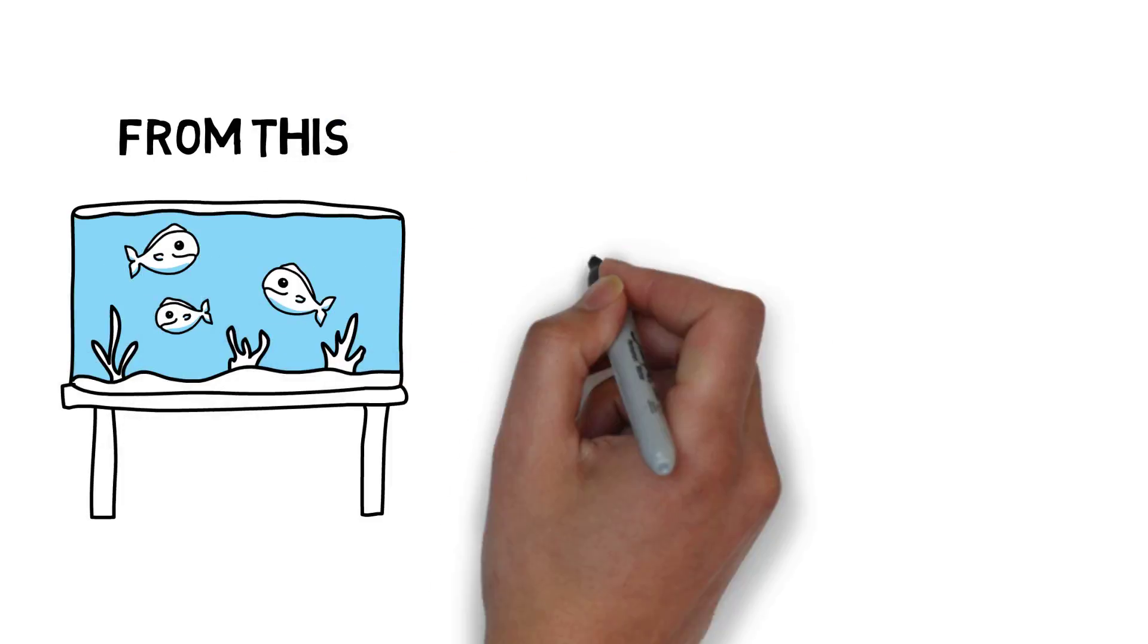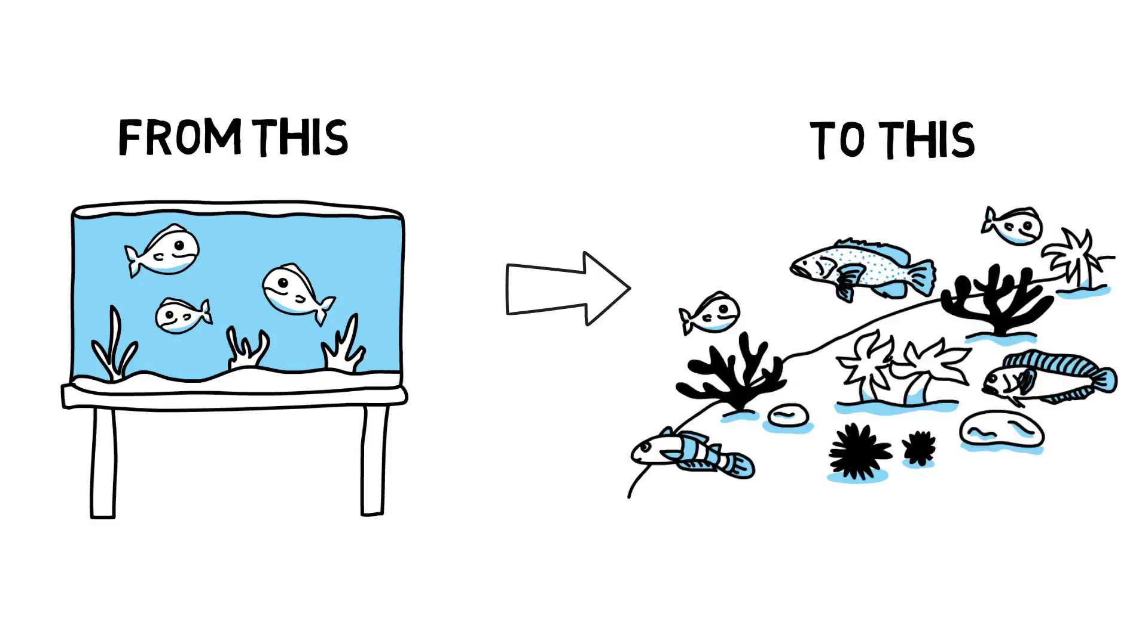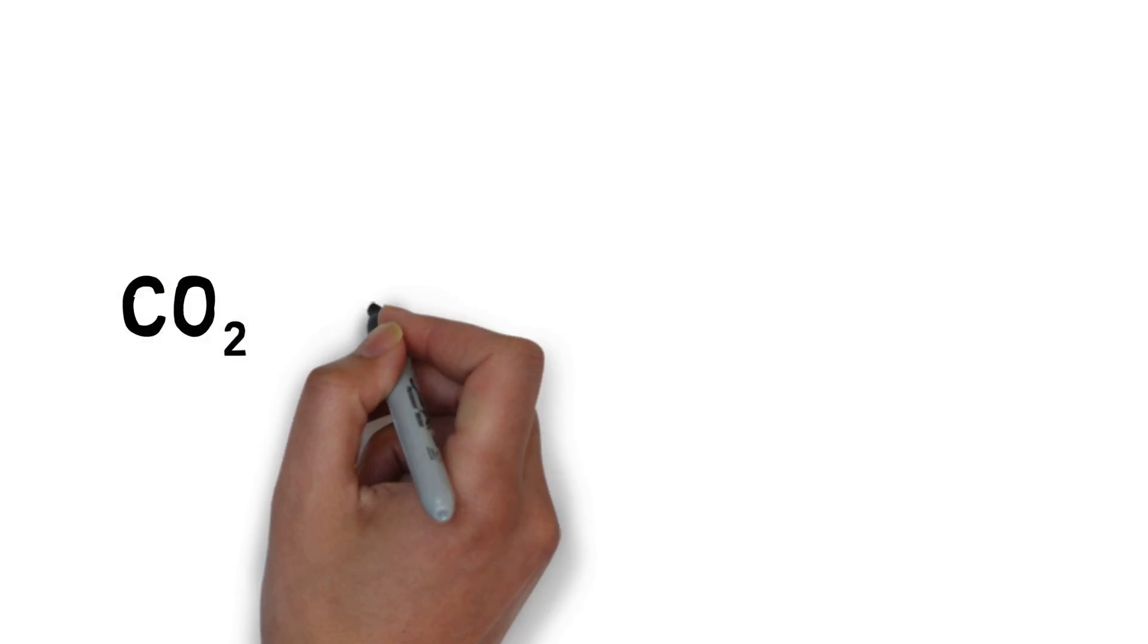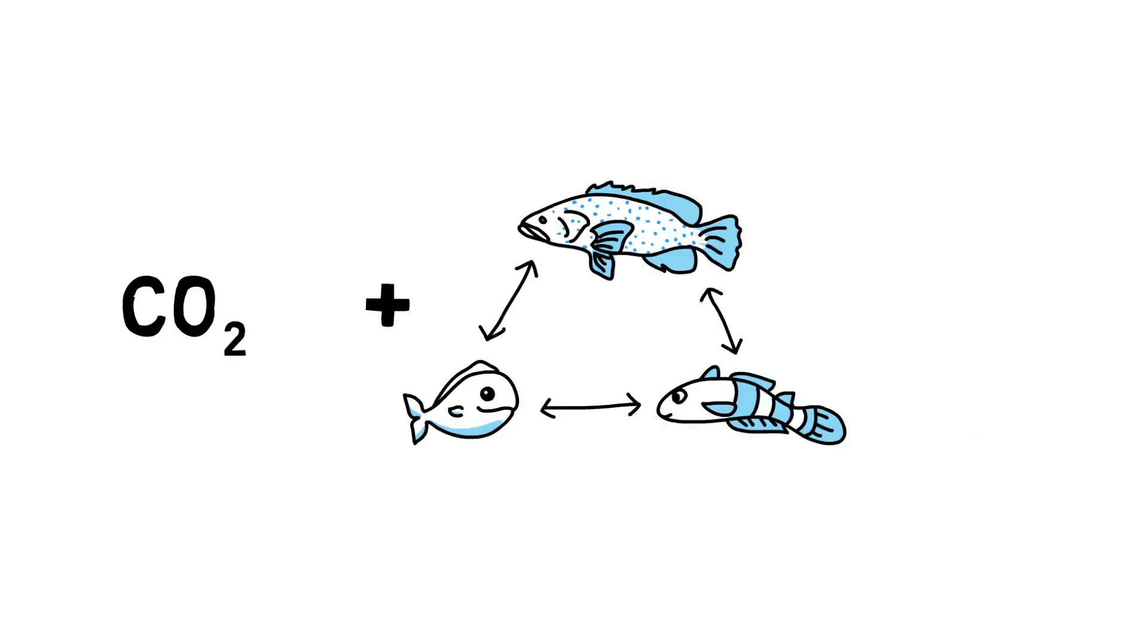It is now time to scale up our studies and try to understand how entire ecosystems and species communities will respond to climate change. This is important because the interactions between species might reveal unexpected effects of climate change that we cannot predict by looking at individual species.